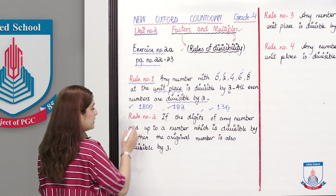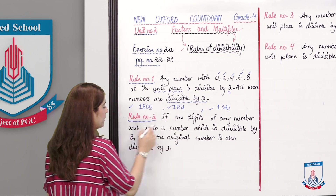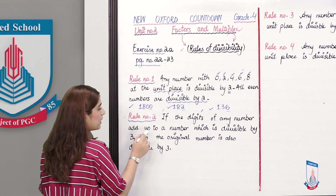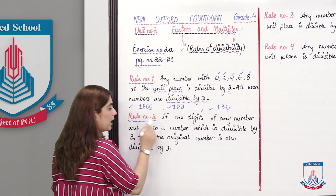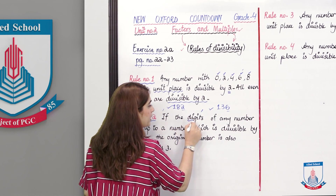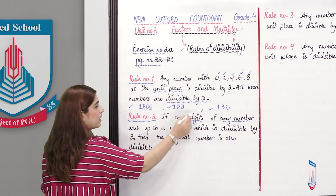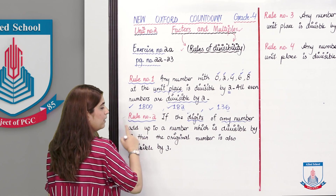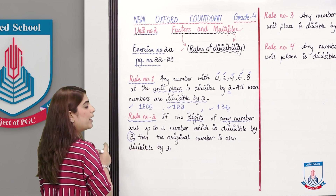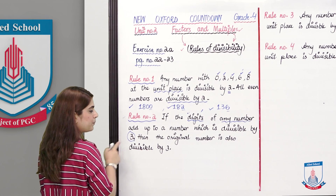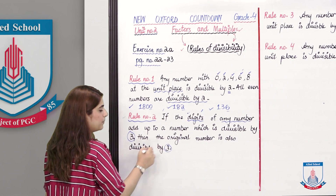Rule No. 2: If the digits of any number add up to a number which is divisible by 3, then the original number is also divisible by 3.